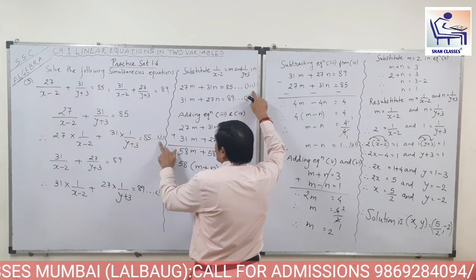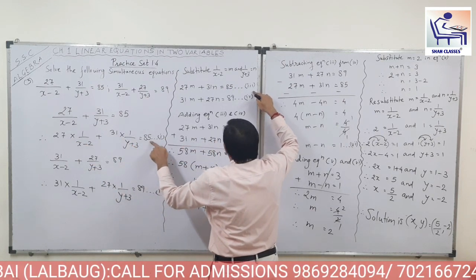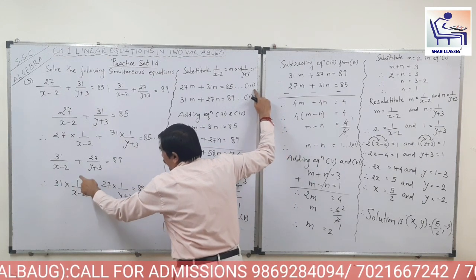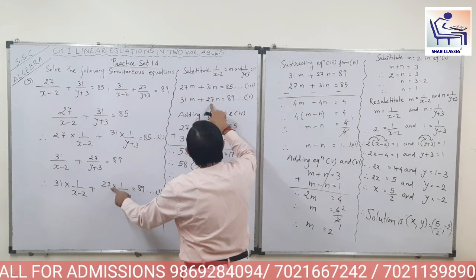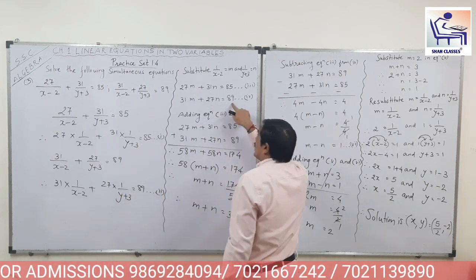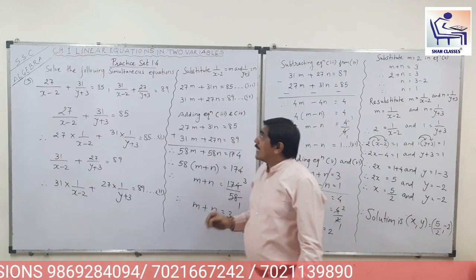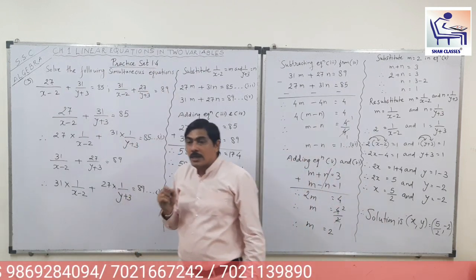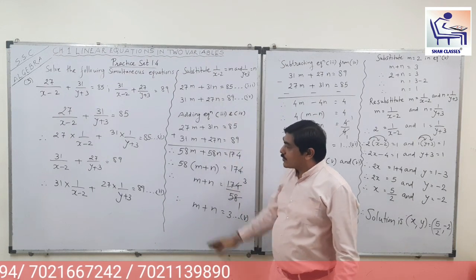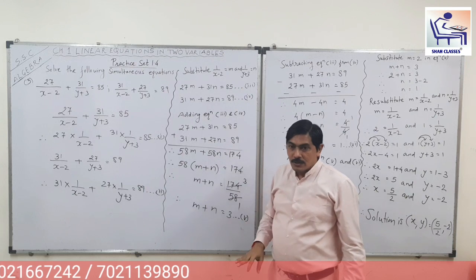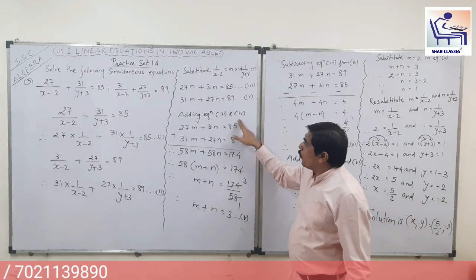From equation 1 we got equation 3: 27M plus 31N is equal to 85. From equation 2: 31 into 1 upon (x minus 2) is 31M, and 27 into 1 upon (y plus 3) is 27N, giving 31M plus 27N is equal to 89. This kind of sum you have already done in practice set 1.1 question number 7 and question number 8, so please practice those first.